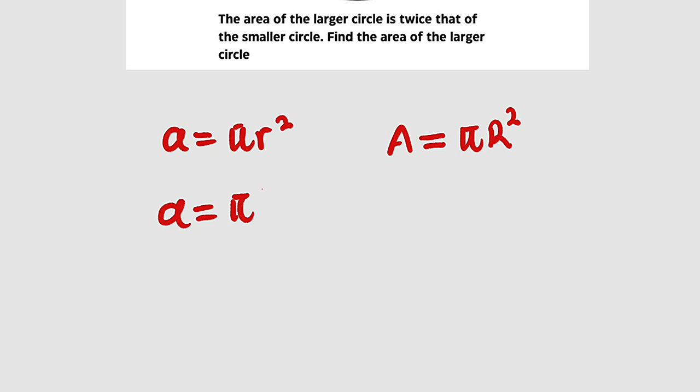Therefore, our radius is 1 squared here. If you simplify this, you have a to be equal to just pi meter squared. So what about the bigger circle?